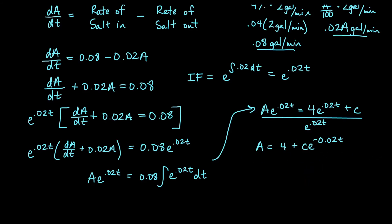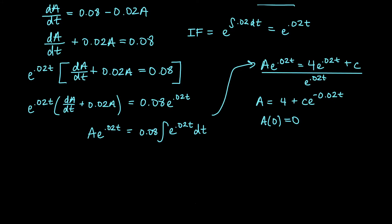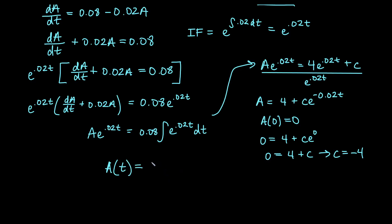We should additionally apply our initial condition. We started with no salt in the tank — it was pure water — so the amount of salt at time 0 was 0. That initial condition was stated in words: A(0) = 0. Plugging in 0 for t and 0 for A, we get 0 equals 4 plus C times e to the 0, which is just C times 1. So that gives us that our constant C is negative 4. Replacing C with negative 4, our particular solution is A(t) = 4 minus 4 times e to the negative 0.02t.